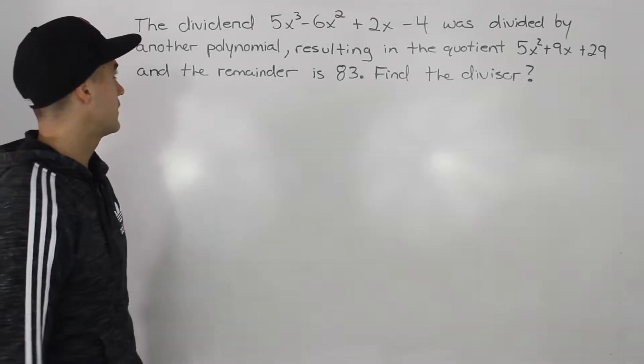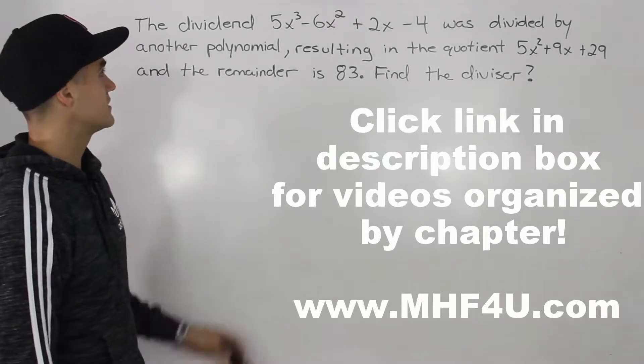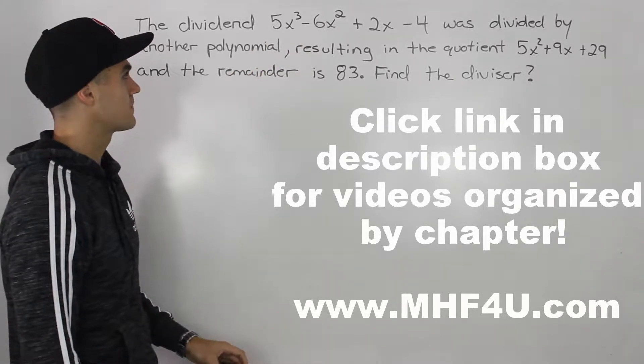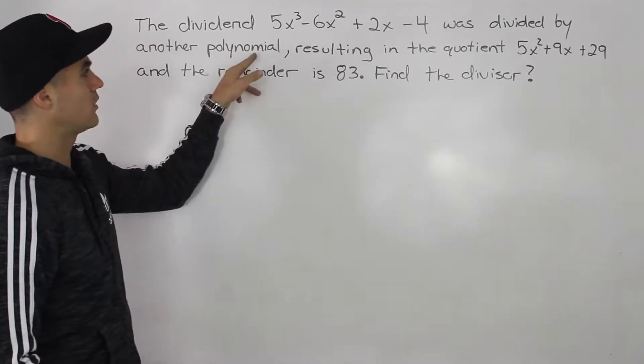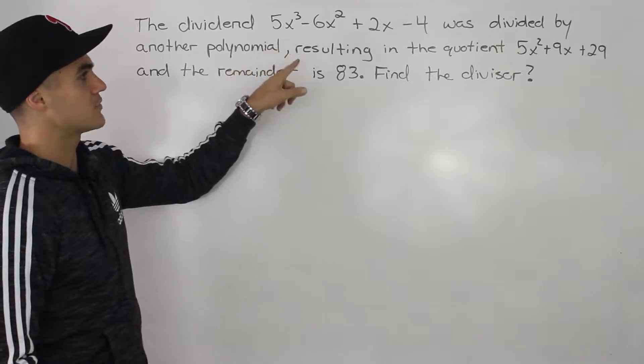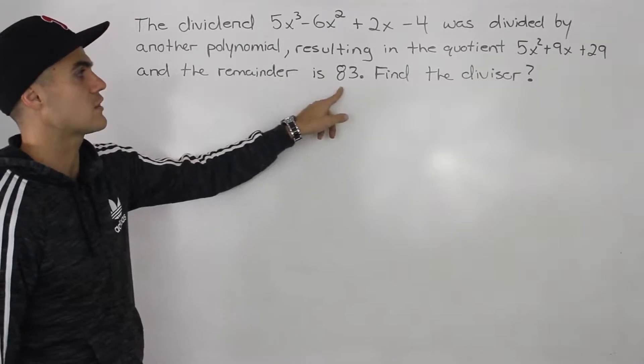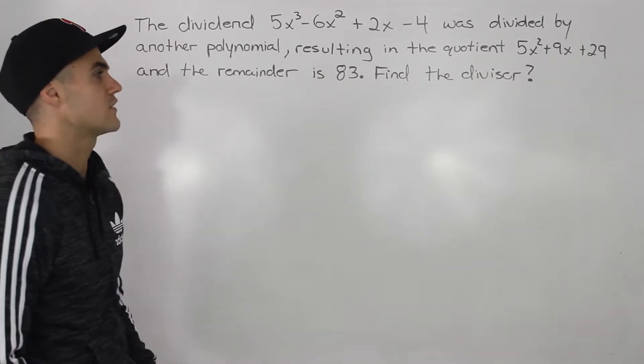Welcome back everybody. Moving on to another question. So we have a dividend 5x cubed minus 6x squared plus 2x minus 4 and it's divided by another polynomial and that results in a quotient of 5x squared plus 9x plus 29 and a remainder of 83 and we have to find the divisor.